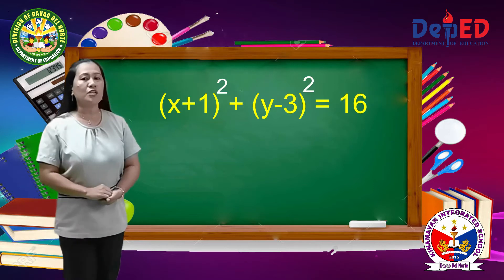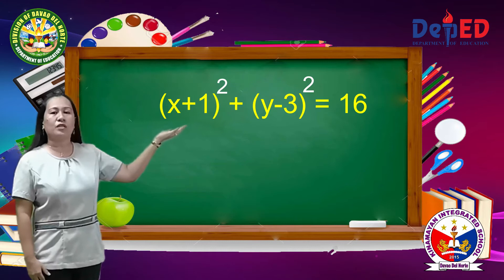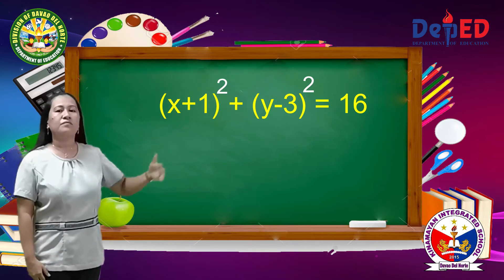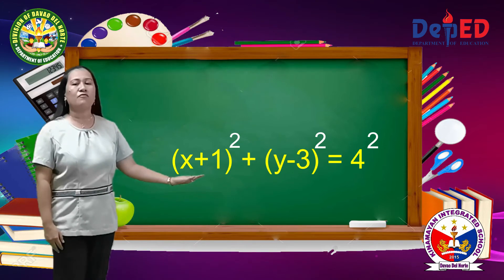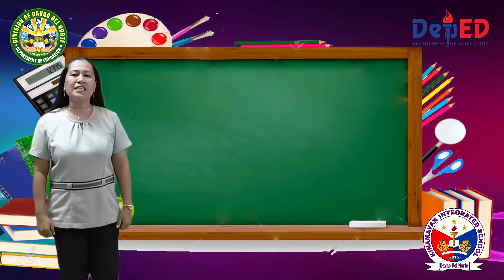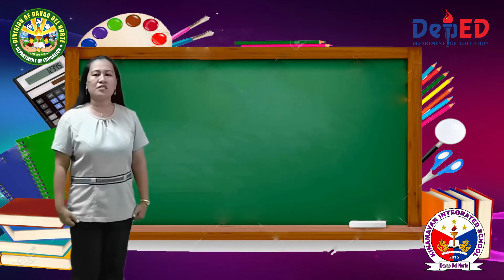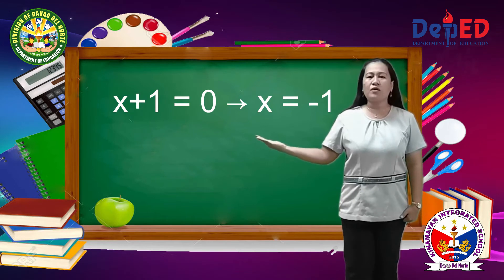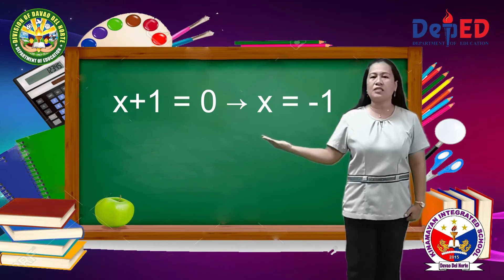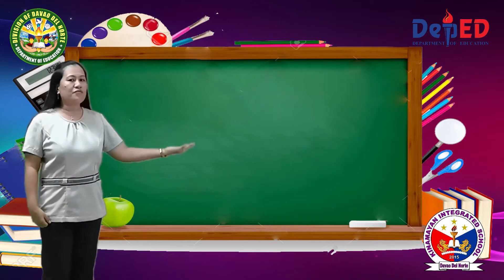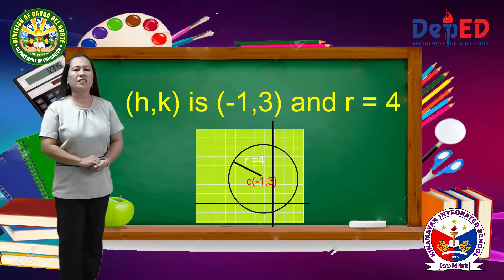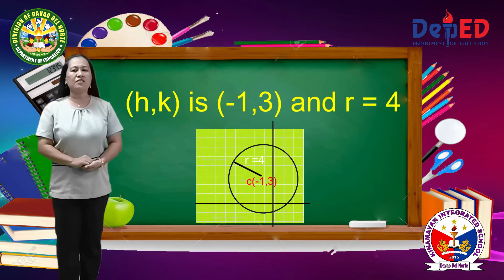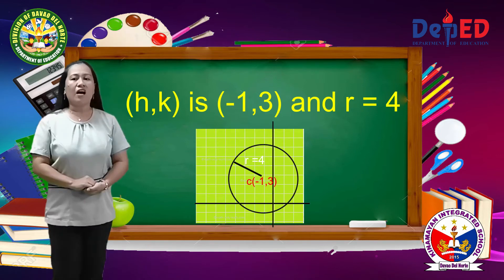we can write the given equation — quantity x plus 1 squared plus quantity y minus 3 squared equals 16 — as quantity x plus 1 squared plus quantity y minus 3 squared equals 4 squared. To get the value of h and k, equate each binomial to 0. For h: x plus 1 equals 0, so x equals negative 1. For k: y minus 3 equals 0, so y equals 3. Therefore, the center (h, k) is (negative 1, 3) and r is 4.